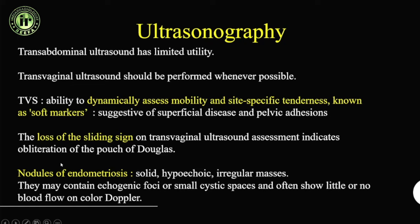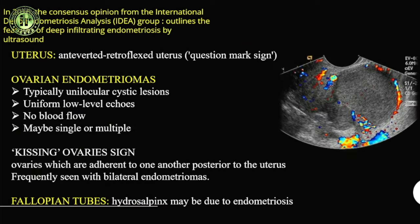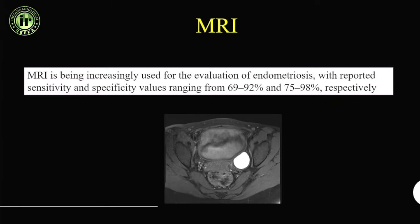On transvaginal ultrasound, we can elicit loss of the sliding sign and identify chances of adhesions between the ovaries and uterus. For MRI, the sensitivity and specificity ranges from 69–92% and 98% respectively — very high for endometriotic deposits.